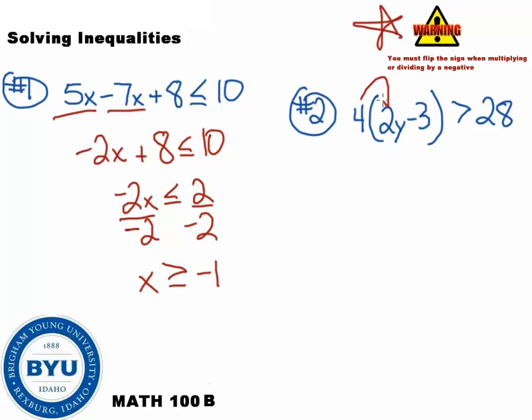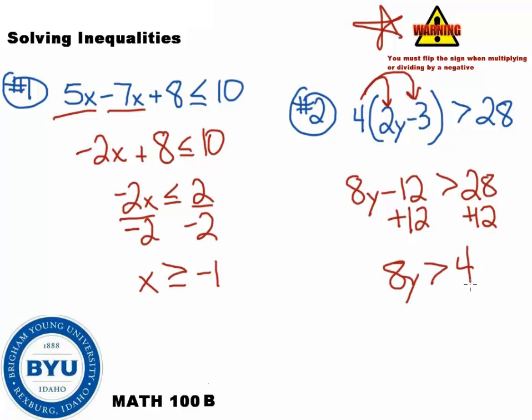On question number two, we would distribute the four into the parentheses. That gives us 8y minus 12 is greater than 28. To undo the negative 12, we would add 12 to both sides. I'm left with 8y is greater than 40. I then divide both sides by 8. And I'm left with y is greater than 5. Now some of you may be asking, whoa, do we need to flip the sign? And you should say, no, there's no sign flippage because we only flip signs when multiplying by negative numbers.